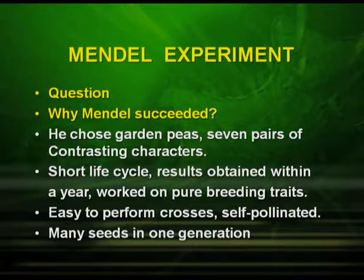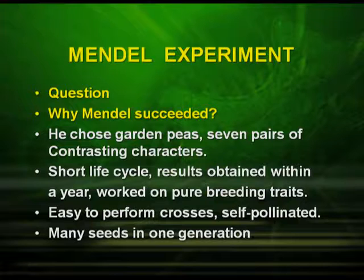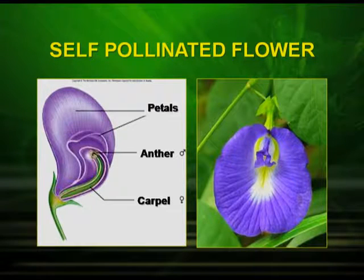Now let us study Mendel's experiment. Why did Mendel succeed? First, he chose garden peas, which have seven pairs of contrasting characters. Second, it has a short life cycle, so results were obtained within a year, and he worked on pure-breeding varieties. Third, it is easy to perform crosses in garden peas because it is a self-pollinated plant, and many seeds are produced in one generation. The pea flower encloses both the stamen and carpel within it, so there is no chance of cross-pollination.